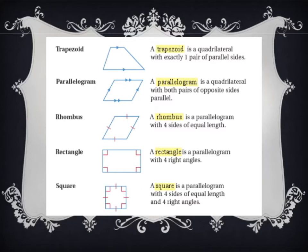A parallelogram is a quadrilateral with both pairs of opposite sides parallel. Just like a trapezoid, it has the top and bottom the same distance apart, but also the sides are parallel — they go on forever and never touch. A parallelogram has four sides and they're all parallel. A parallelogram kind of looks like a slanted rectangle.